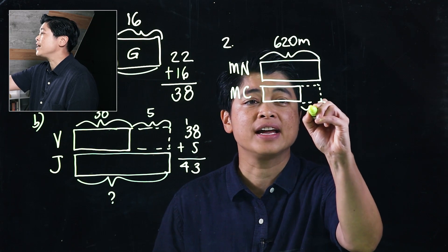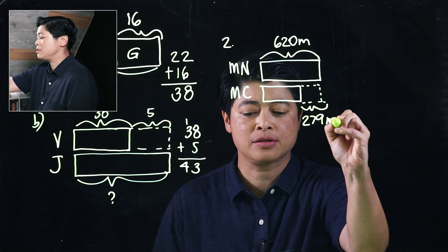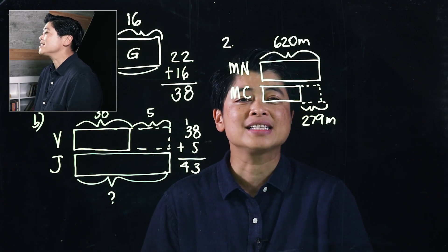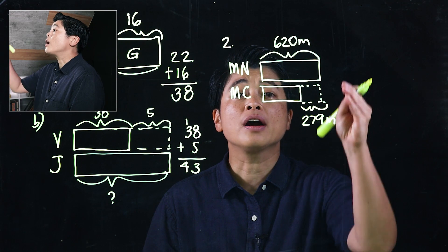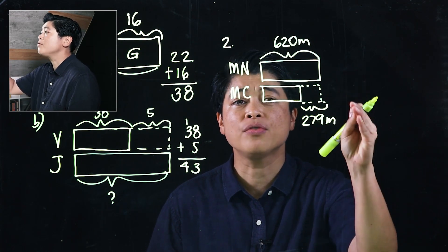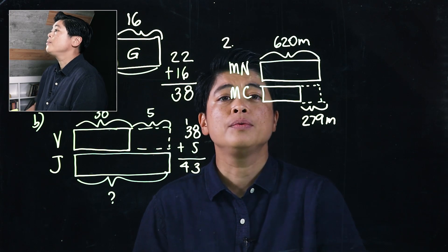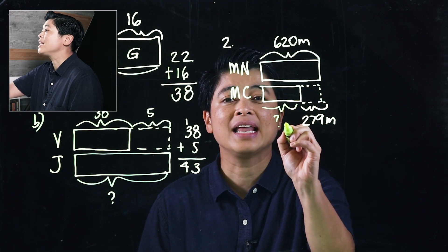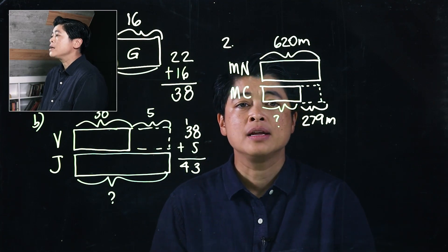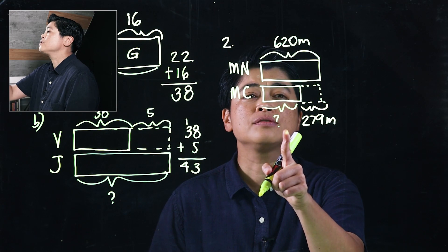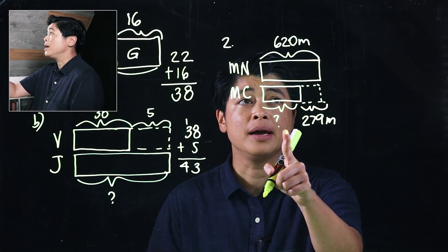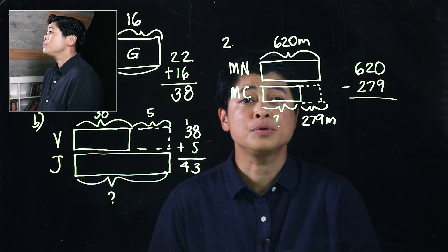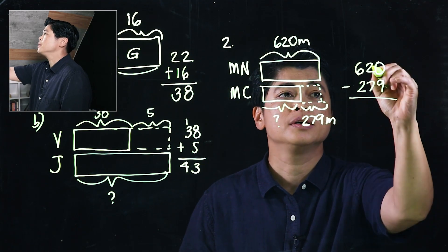So Mr. Nang's fence was 279 meters longer than Mr. Chang. So the question is how long are their fences together? But before we can figure out how long together, we need to find Mr. Chang's first. So that would be like our question A. Since part is missing, this will be a subtraction problem: 620 minus 279.